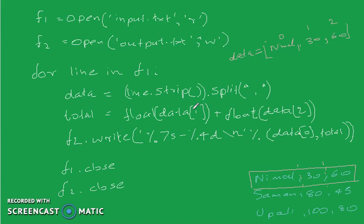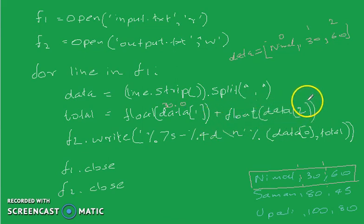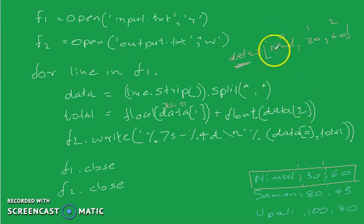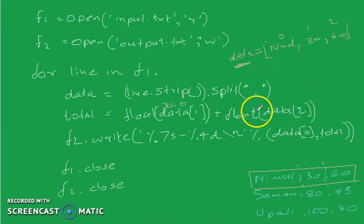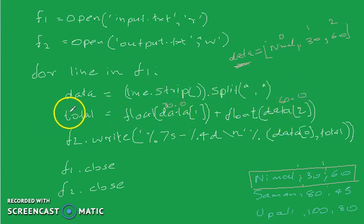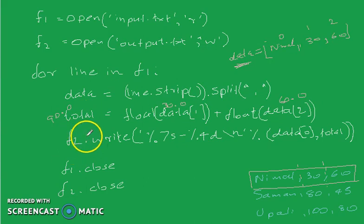We will cast the float to float. If we are using float, we will cast the float to float. So if you want to add data to the variable, then you can add the list to the list. If you want to add data to the variable, then you want to add data to the list. This is f2.write.